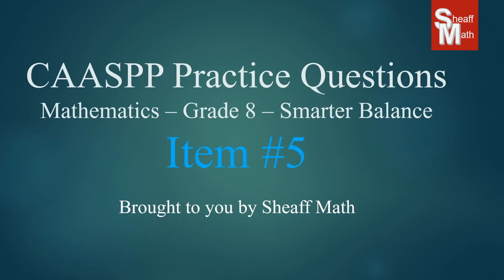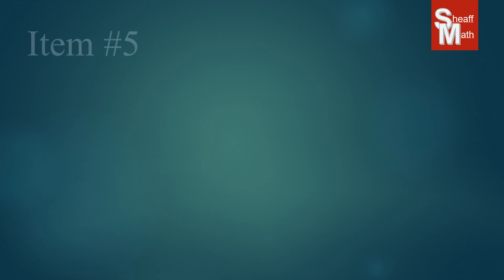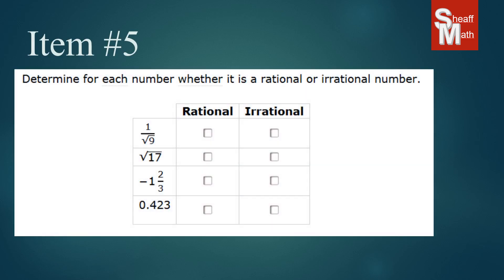Caspi practice test, item number five. For item number five, we have a question that says determine for each number whether it is a rational or irrational number. And so we have four different questions we have to check the correct box.